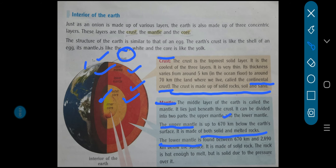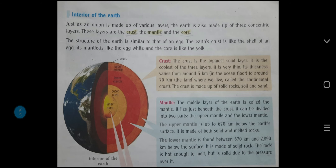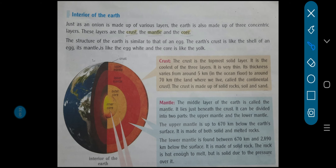Now the second comes the lower mantle — what do you mean by it? It is found between 670 km and 2,890 km below the surface. The upper mantle is only up to 670 km, and the lower mantle is the portion just below that — going further down to 2,890 km below the surface. The lower mantle is made up of solid rocks. The rock is hot enough to melt but remains solid due to the pressure over it — uske upar jo pressure rehta hai, uske wajah se woh solid rehta hai.